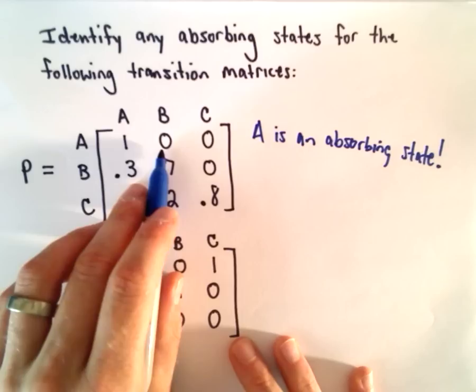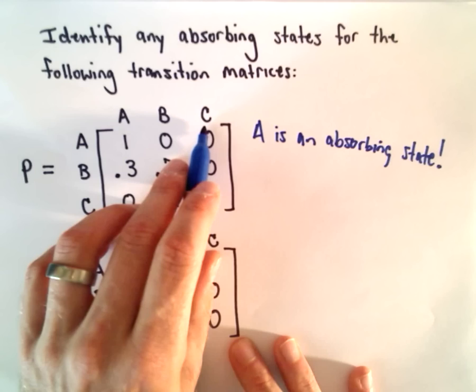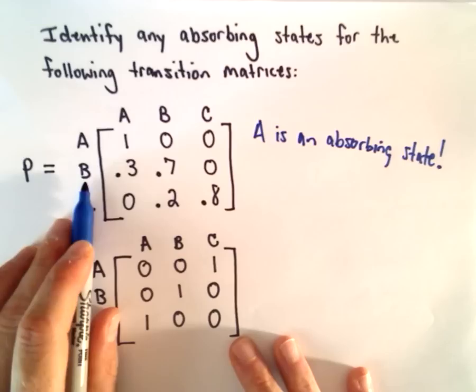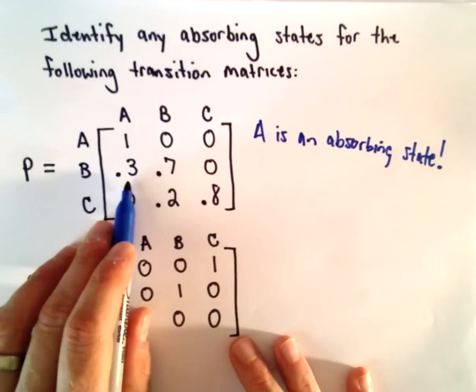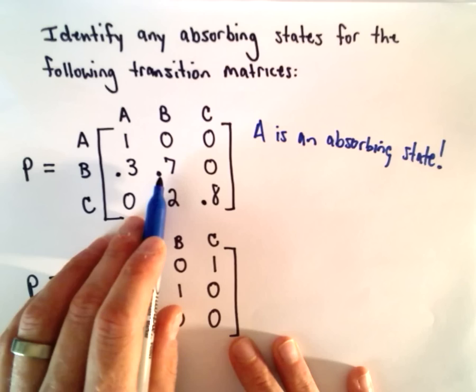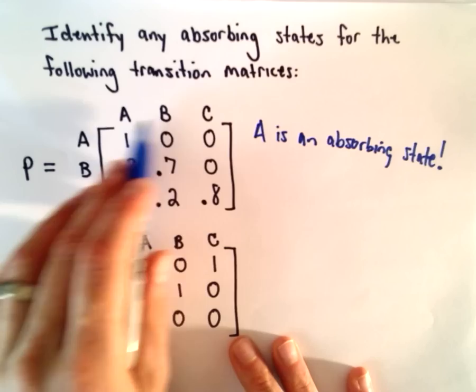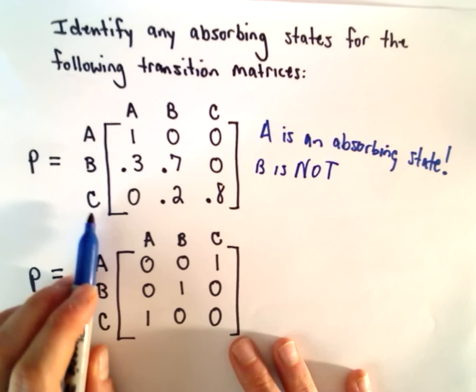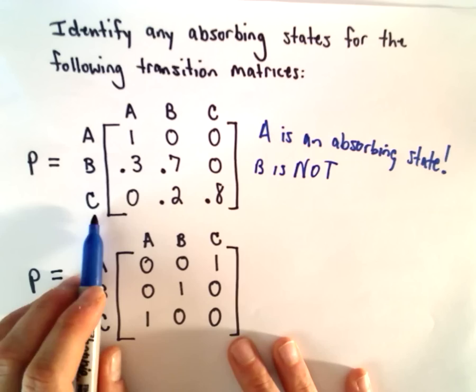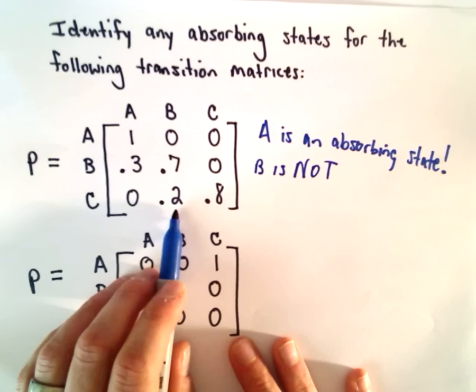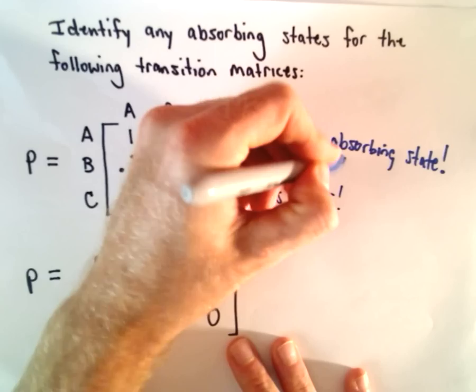If you're in state B, there's a 0.3 probability you may end up going somewhere different, and a 70% probability that you may stay in state B. Since you can end up in either A or B from state B, B is not an absorbing state. Same thing for state C — there is a 20% probability you'll actually leave and go to state B, so C likewise is not an absorbing state.